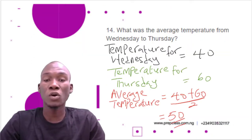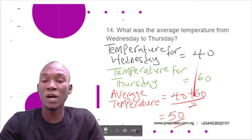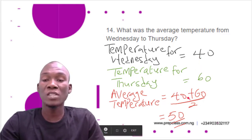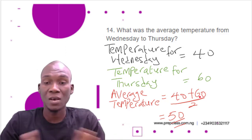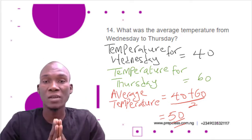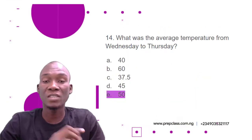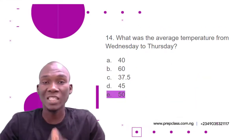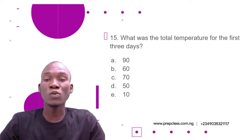With these two temperatures we can answer the question. Temperature for Wednesday is 40 and temperature for Thursday is 60. The average temperature is the sum of the two values, 40 plus 60, divided by the number of values which is 2. 40 plus 60 gives us 100, and 100 divided by 2 is 50. The correct option is option E, 50.